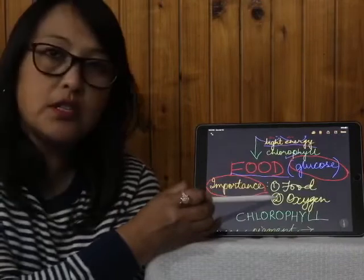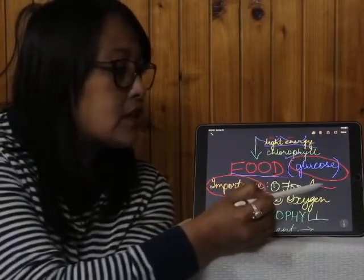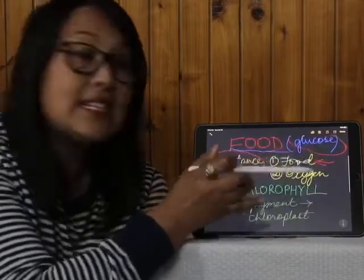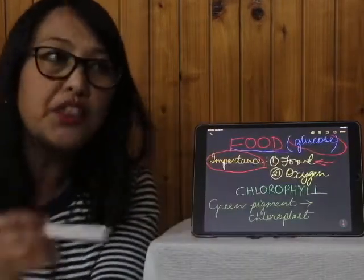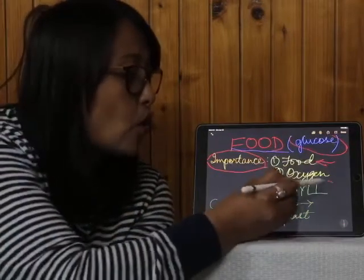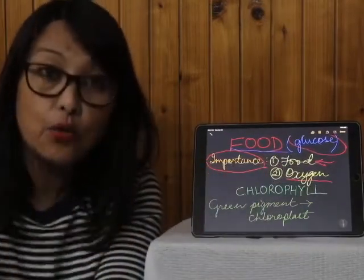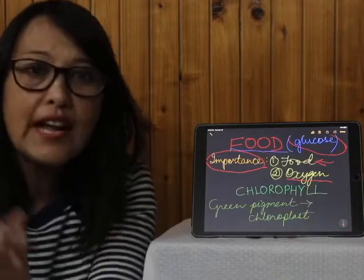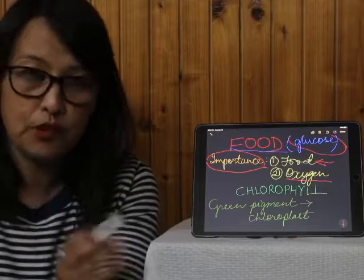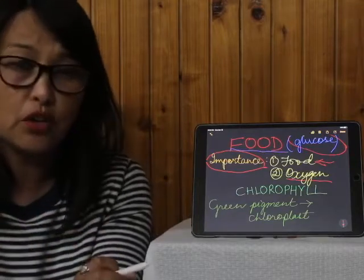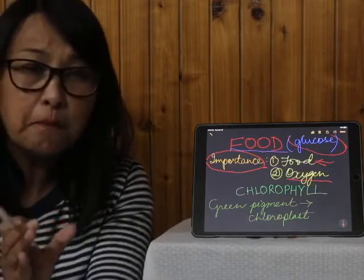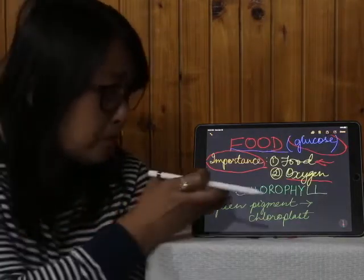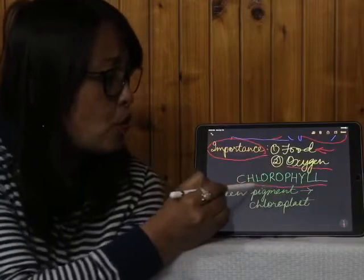There are two importances of photosynthesis. Number one: it produces food for all living beings. Number two: the by-product of photosynthesis is oxygen — oxygen gas is released as a by-product. All living organisms need oxygen for respiration, so photosynthesis is truly a life-giving process.